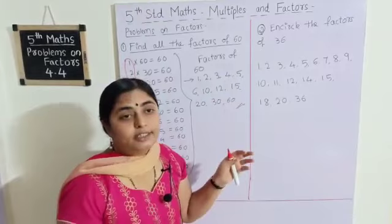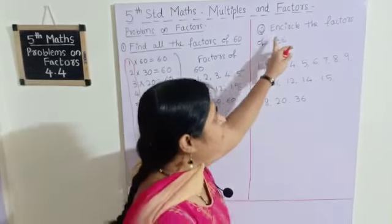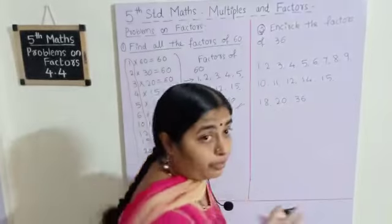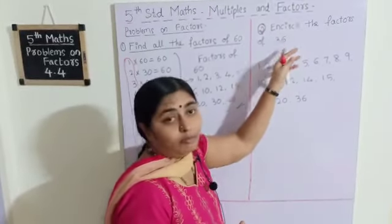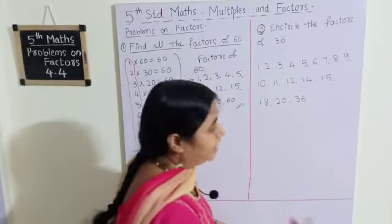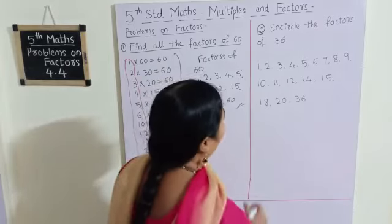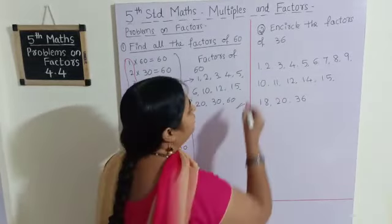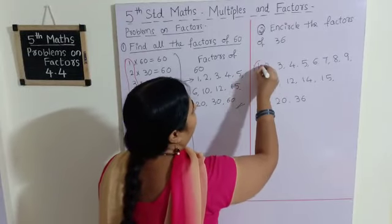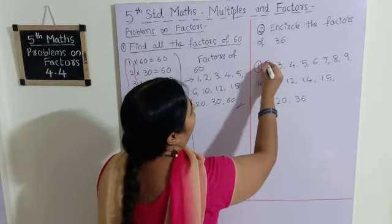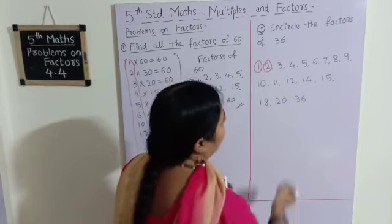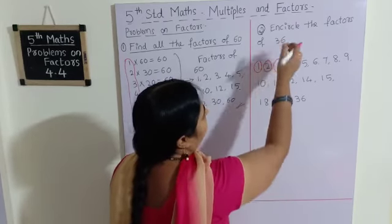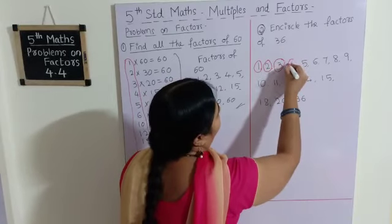Let's see another example: encircle the factors of 36. Here we have to find in which table we can find the number 36, then circle those numbers. In the table of 1, we find all numbers, so the first factor is 1. In the table of 2, we find 2.